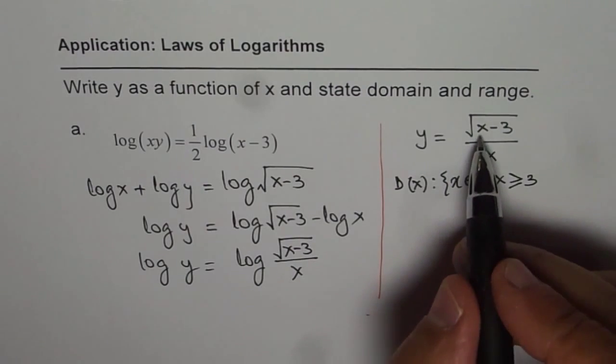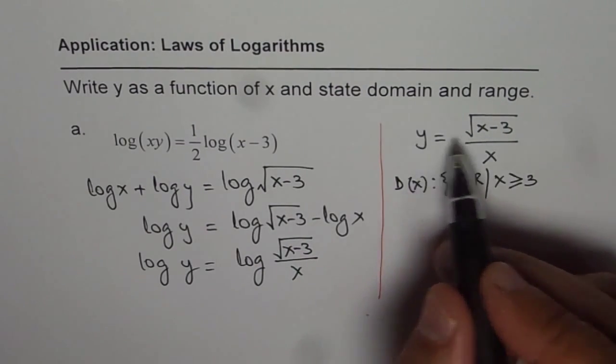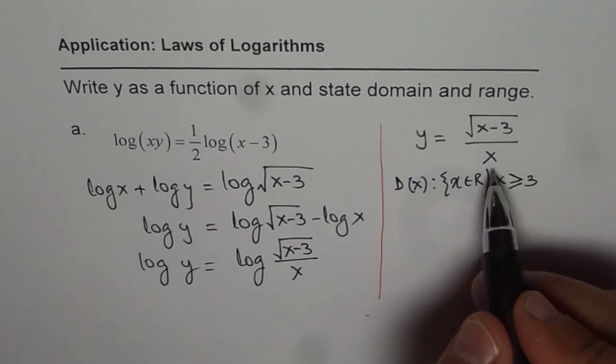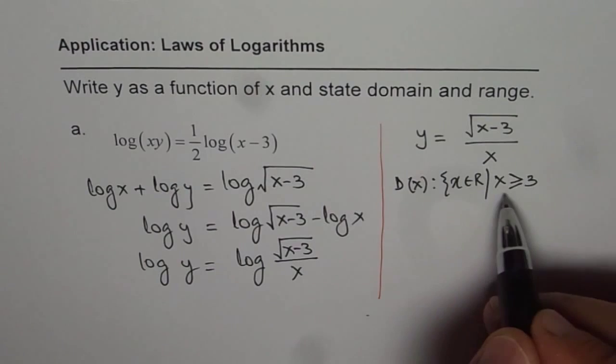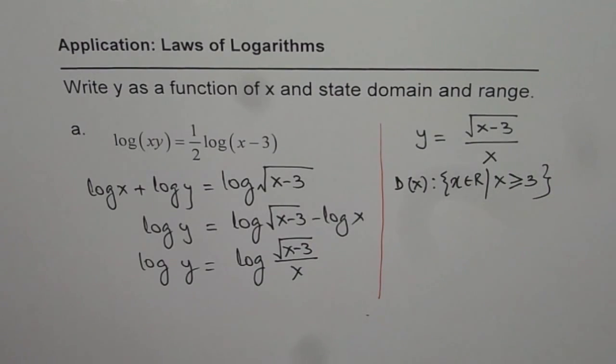So it is actually greater than or equal to 3. It can be equal to 3. 0 divided by anything will be 0. But x minus 3 should not be negative. It has to be non-negative. Now denominator is 0 when x is 0. But since we are taking a domain which is greater than 3, so that is already avoided. So that becomes the domain of the function. Now as far as the range is concerned,